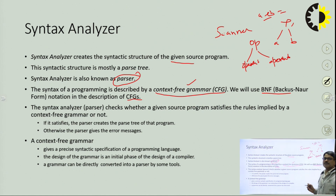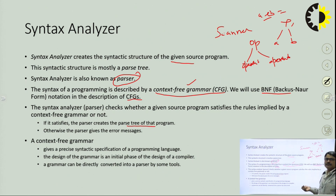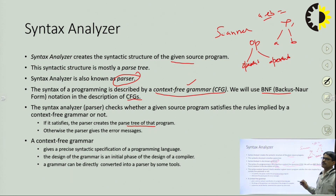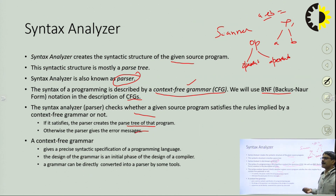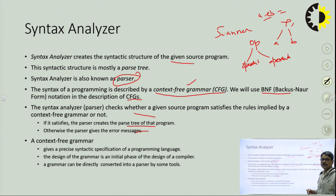The syntax analyzer checks whether a given source program satisfies the rules implied by a context-free grammar or not. If it is successfully parsed without any problem and makes a parse tree, then it satisfies the process. Otherwise, it will generate an error. The parser's function is that whatever context-free grammar you have taken, if you are generating any syntax for that grammar that is accepted by it, then only the parse tree will be generated. Otherwise, it generates error messages showing that the syntax is not part of the context-free grammar.